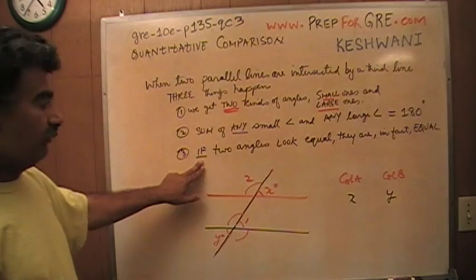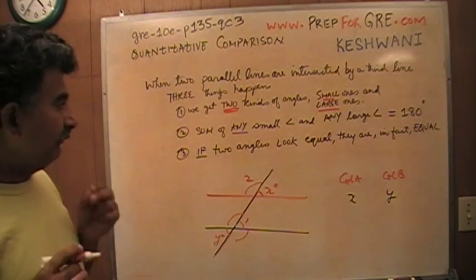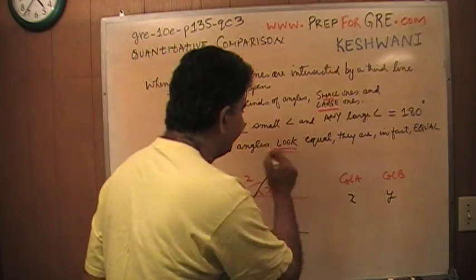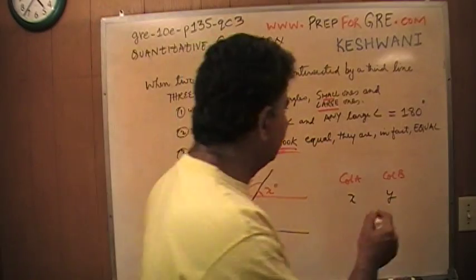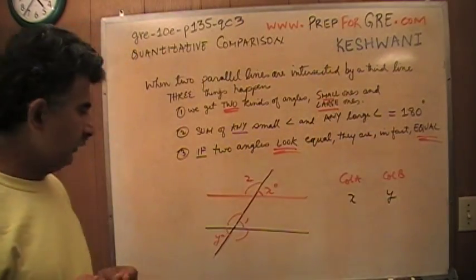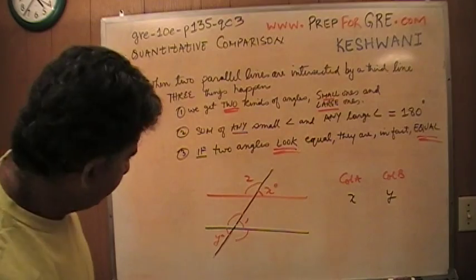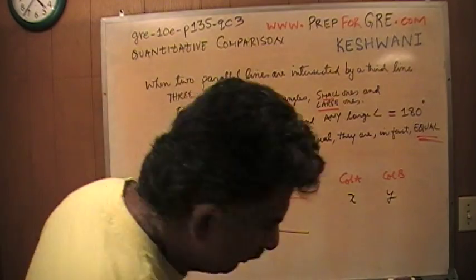Number three, if two angles look equal to you, if they look equal, they are in fact equal and that's all you need to know. So in this particular question, let me erase all this extra part because now I made it too crowded.